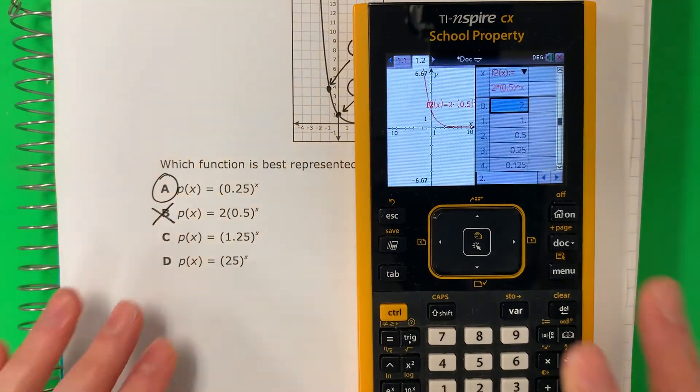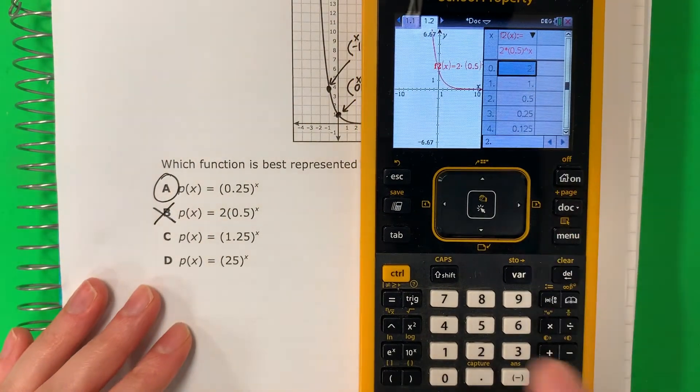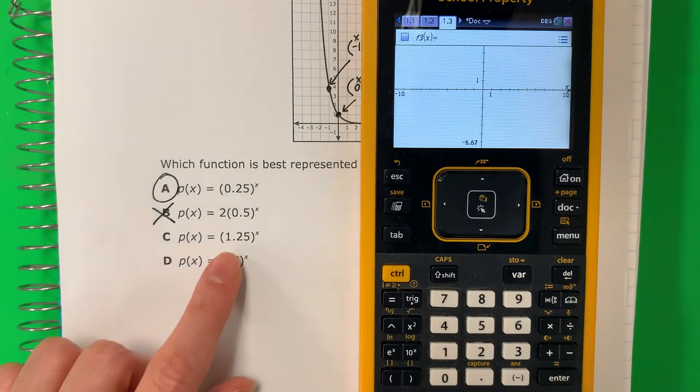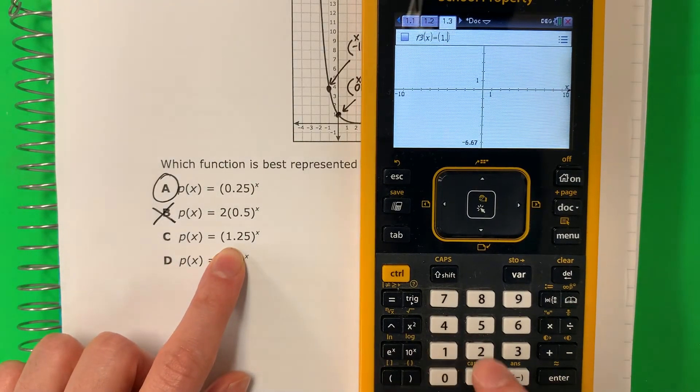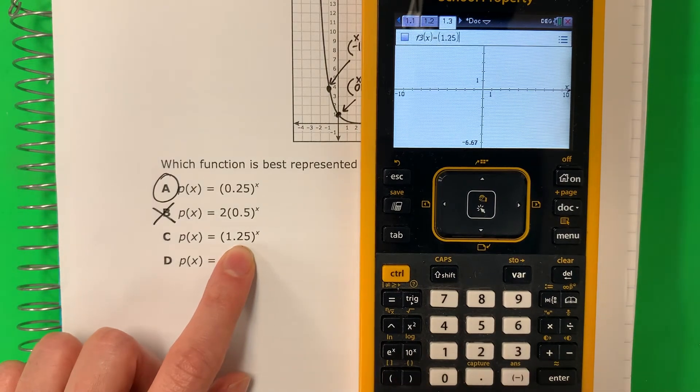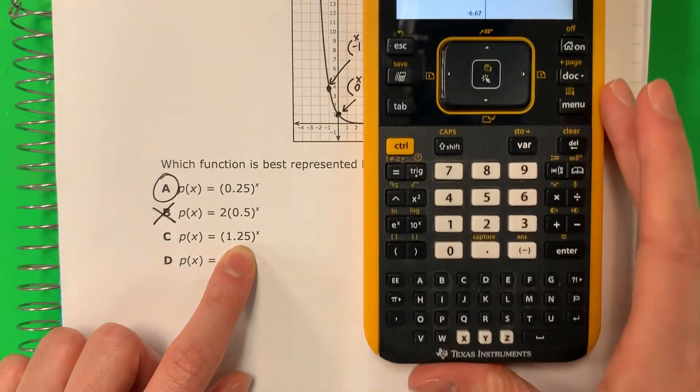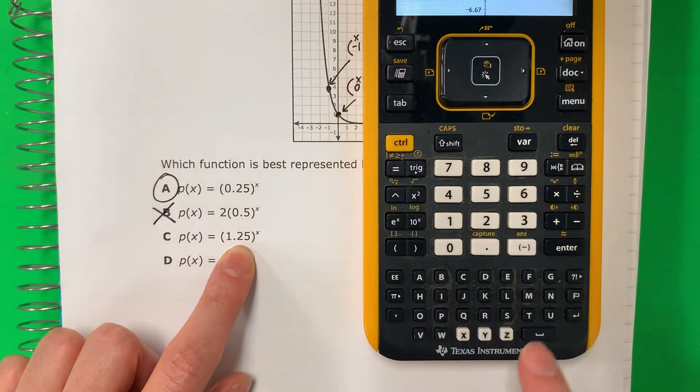Let's try another one for practice. Control. Two. Parenthesis. One point two five. Close parenthesis. Exponent. X. Enter. Table. Control T.